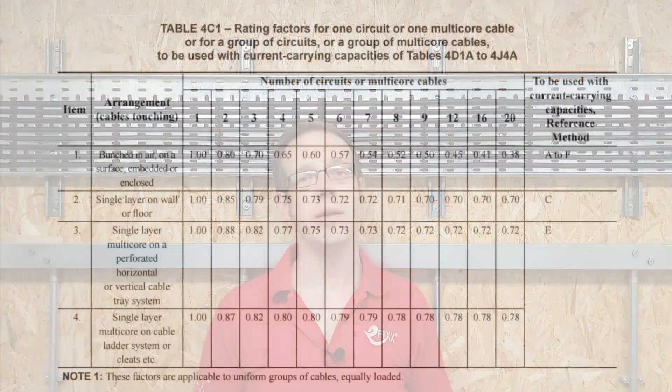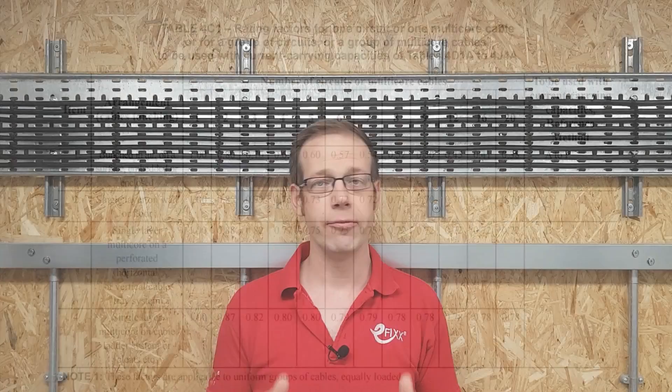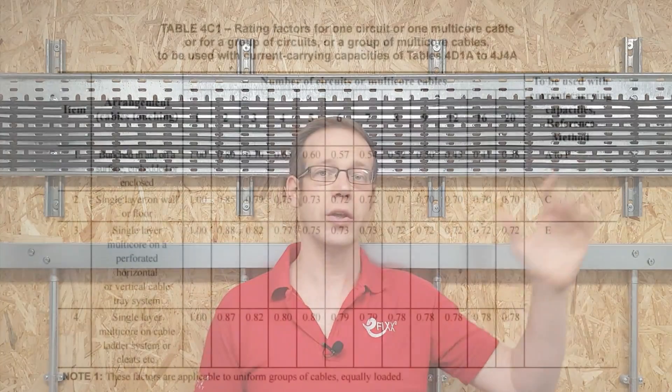Table 4C1 in BS 7671 gives a factor that is used to effectively increase the maximum current a cable must be able to carry, and in reality this results in needing a cable with a larger cross-sectional area. So let's look at an example: if we've got eight cables fixed to a tray feeding eight lighting circuits...